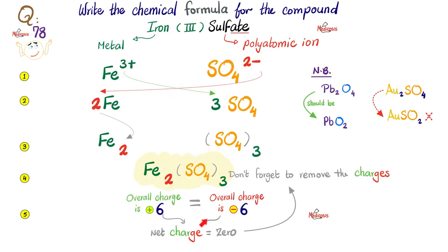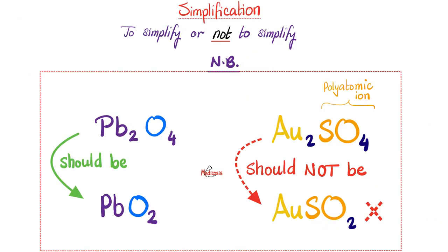Pay close attention — you need to simplify when possible. For example, if you get PB₂O₄, divide by 2: PBO₂. However, do not simplify inside a polyatomic ion. SO₄ should stay SO₄ at all times — it is a singular polyatomic unit and cannot be broken apart.